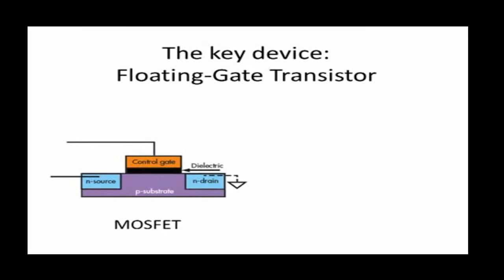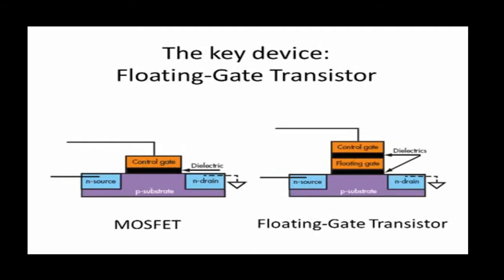The key device that flash memory is based on is the floating gate transistor. The floating gate transistor is a variant of the MOSFET, but with one small change, which is that an extra gate is added in between the control gate and the body.